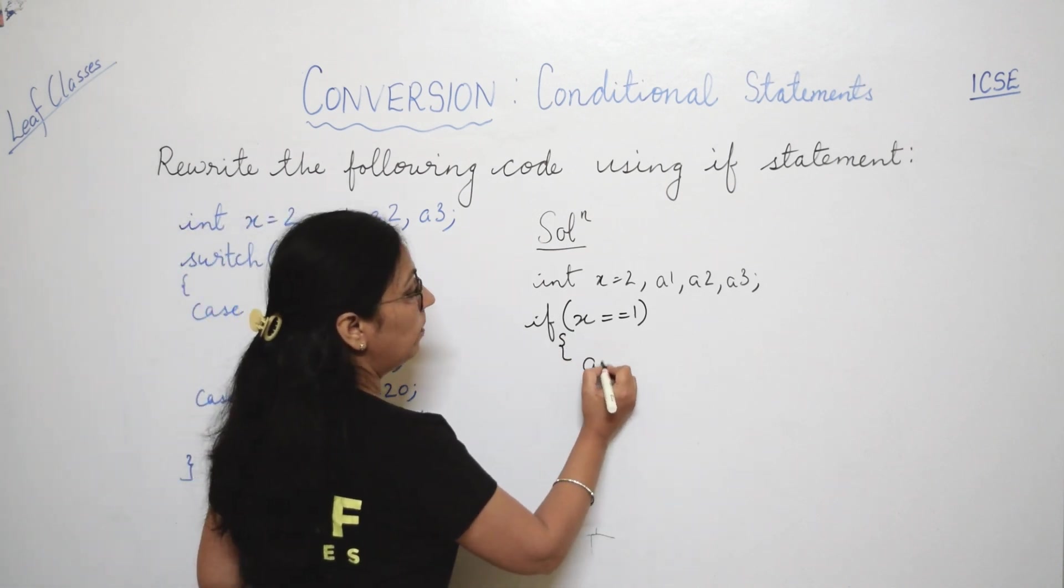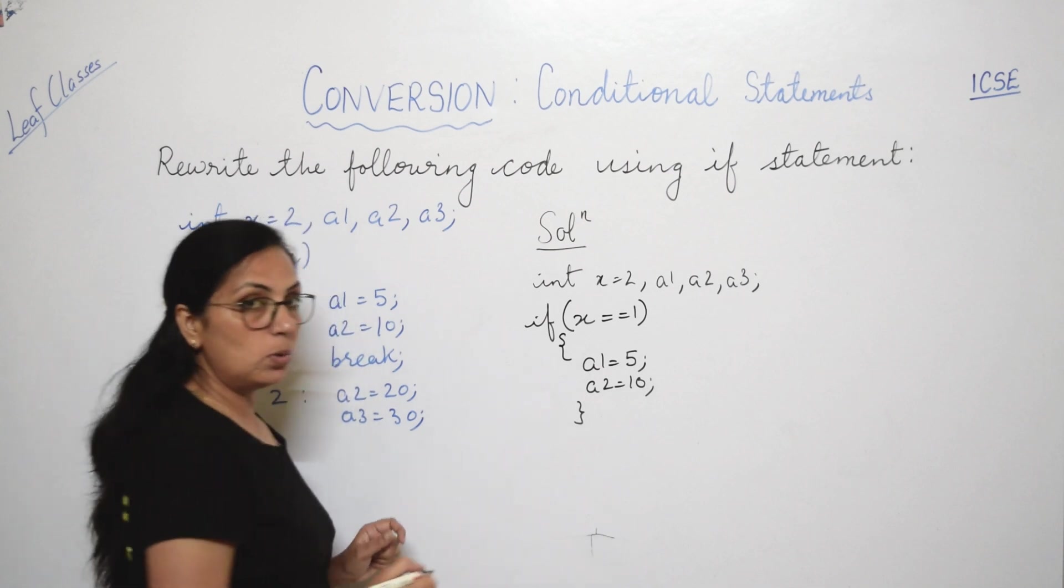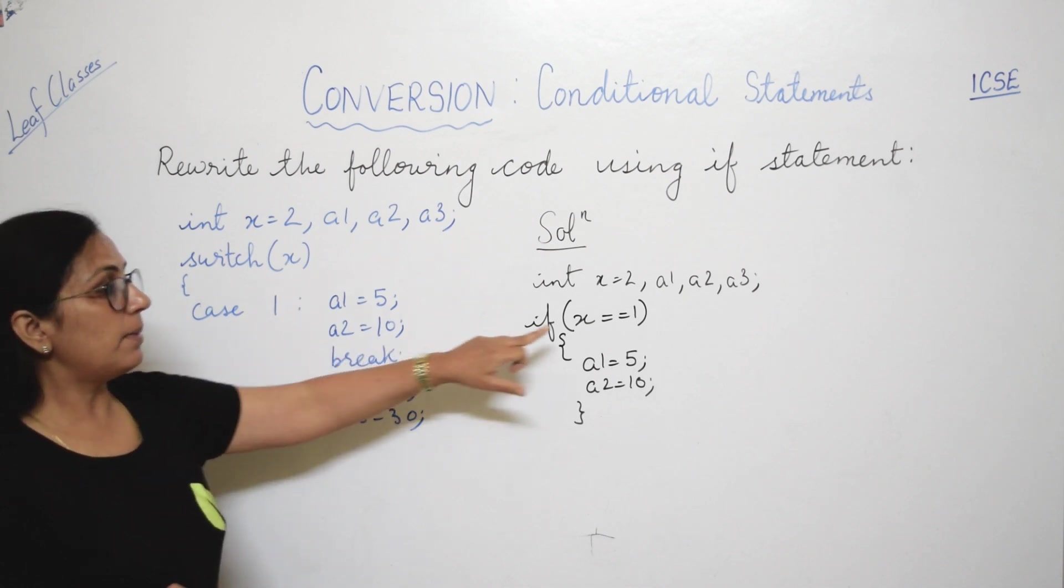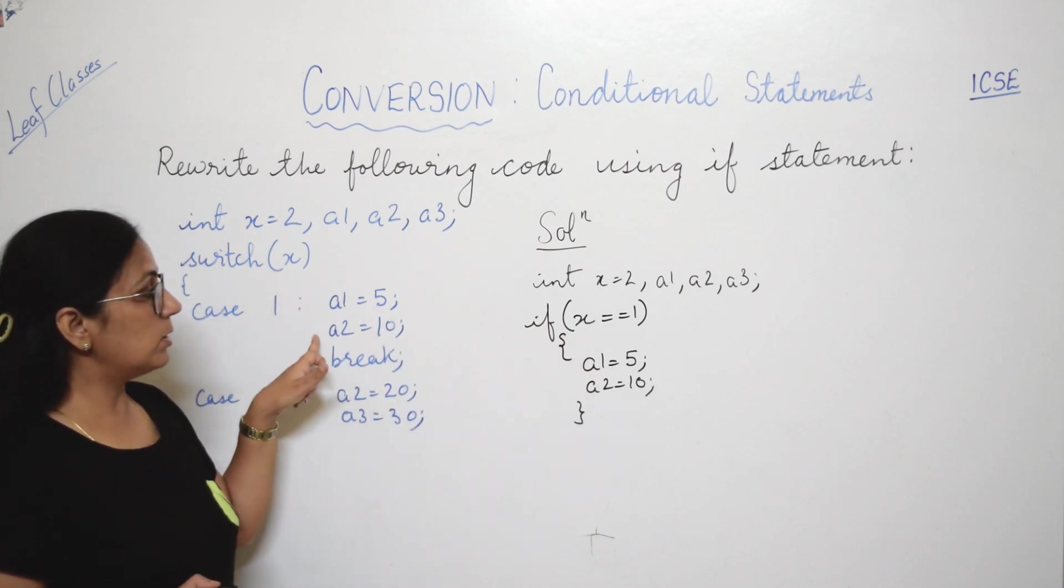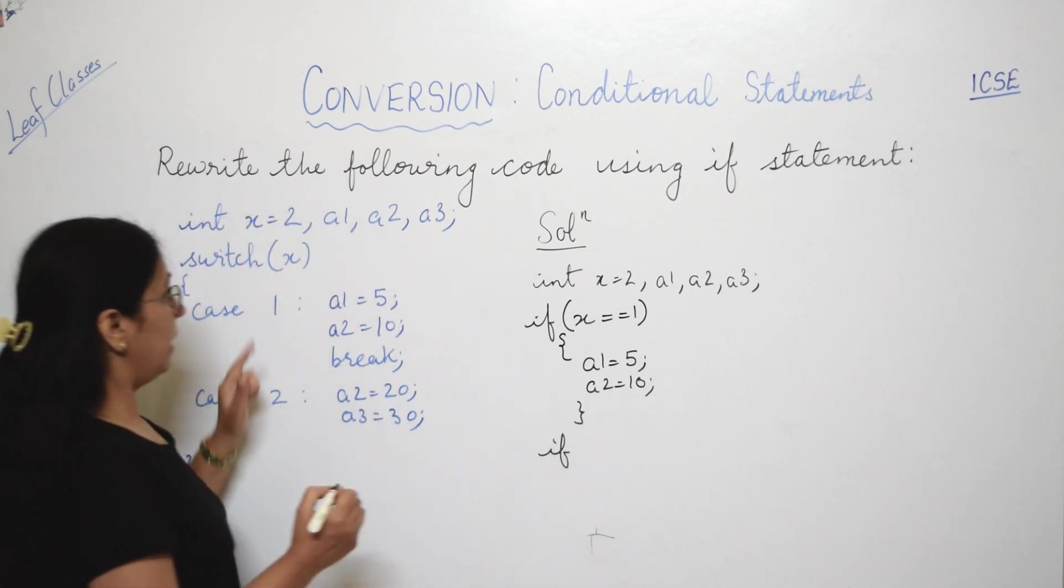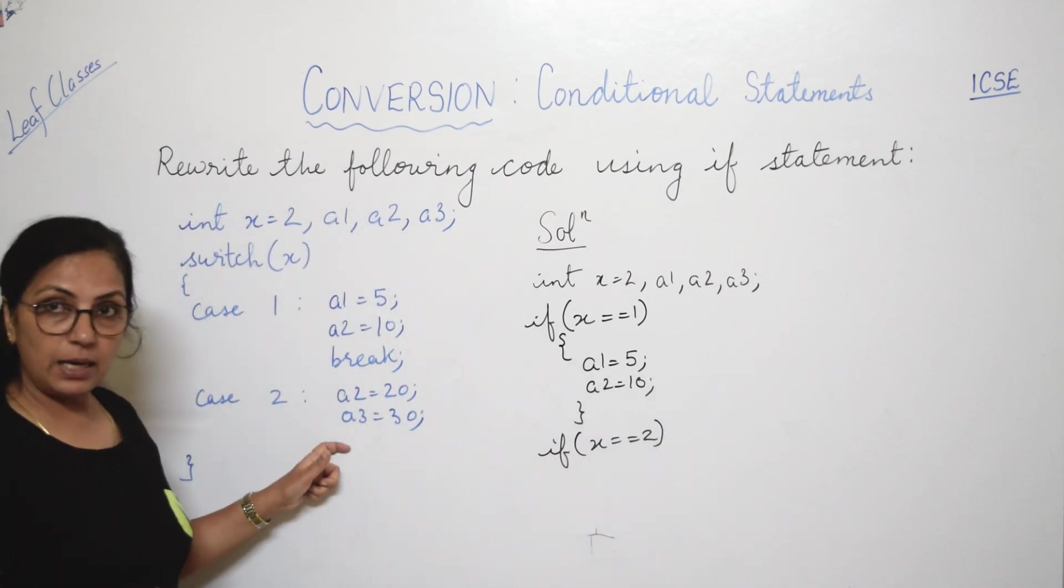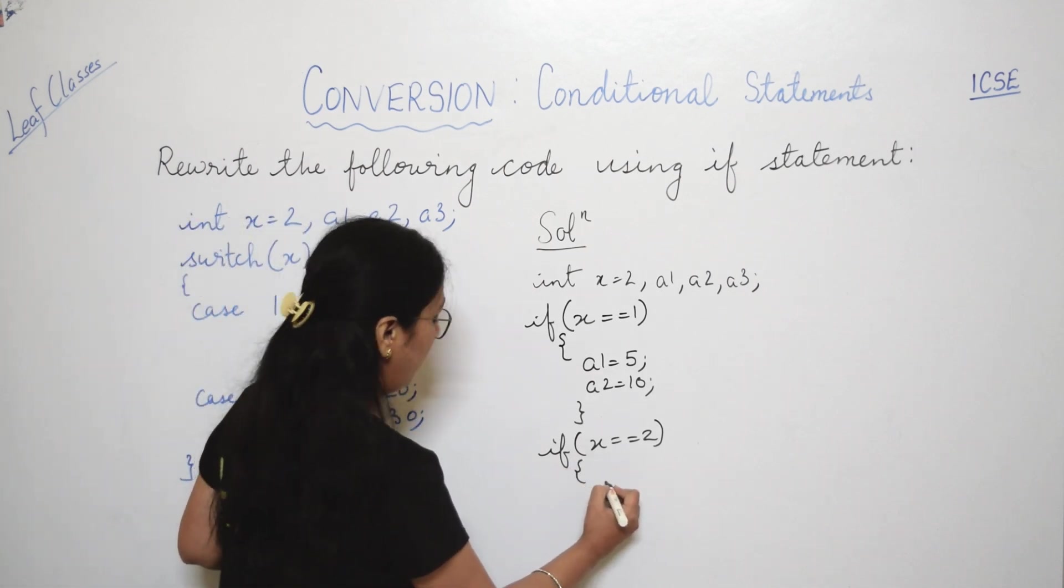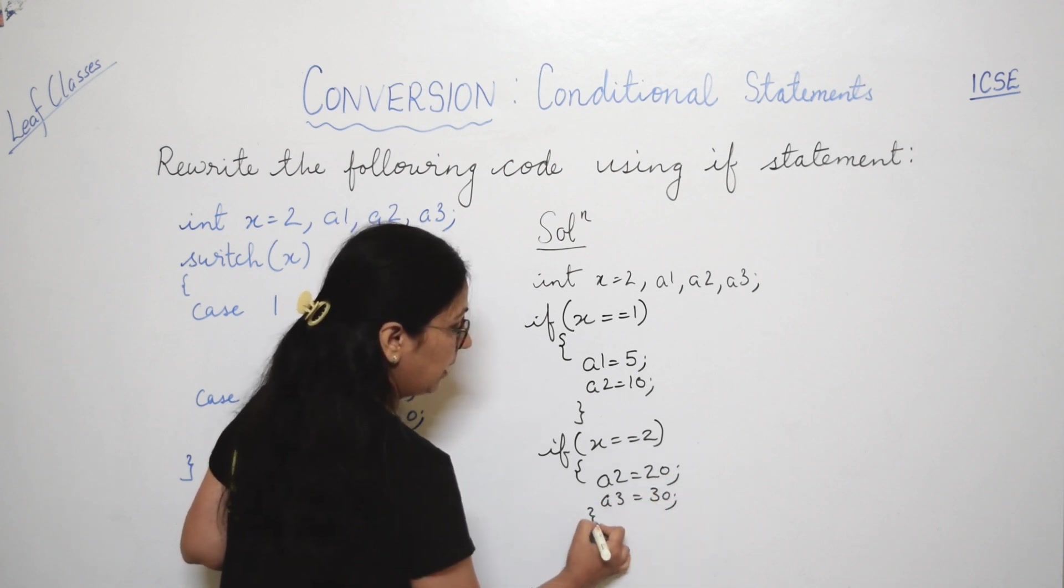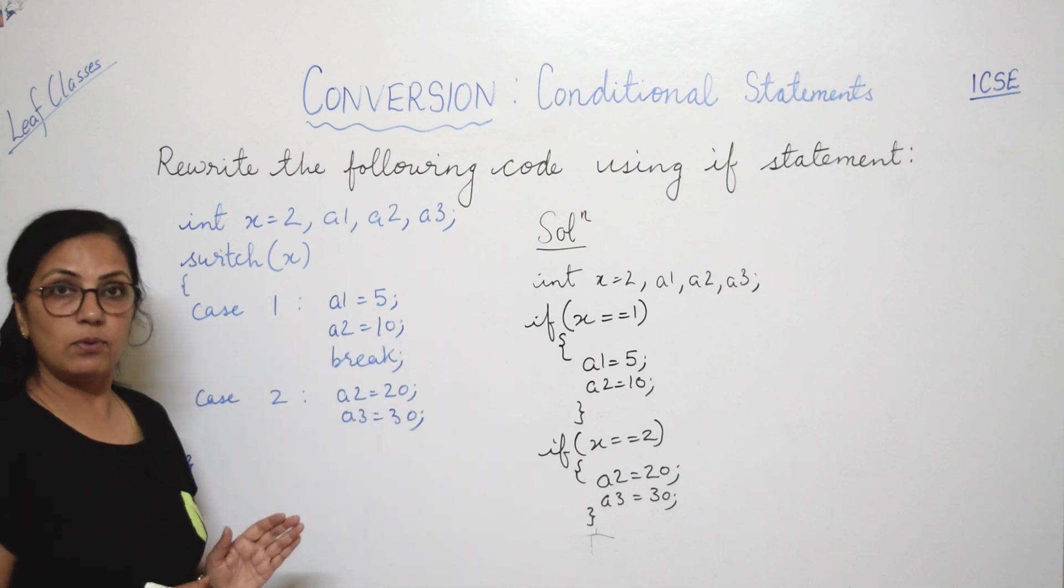If you see here, two statements are required when the value of case is 1. So more than one statement you have to put within the braces, right? a2 equals to 10. There is no such statement for break. Break ke liye hum kya? Close karna hai ki woh doh statements execute hone hai jab x ki value 1 hai. That is a1 equals to 5, a2 equals to 10, aur isko ek block mein kar diya, right? Aur second aapka kya condition hai? x ki value agar 2 hai. So again you will put that: if x is equals to 2. So aapke again two statements are there. So we need to put them within the braces. a1 equals to 20 and a3 equals to 30. That's it, right children? So I hope how this is converted to if, it is clear to you.